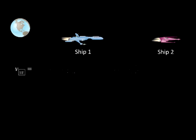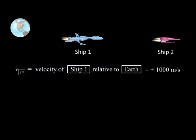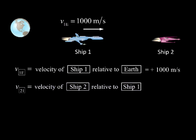The speed V1e stands for the speed of ship 1 relative to Earth, and is plus 1,000 meters per second, meaning to the right in this case. V21 is the speed of ship 2 relative to ship 1, which are moving along the same line, and has a value of plus 250 meters per second.